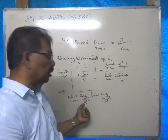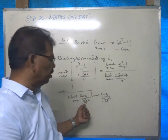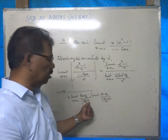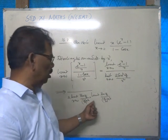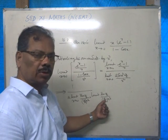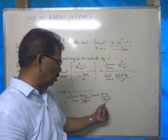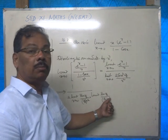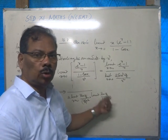Instead of x in the denominator, we have written x by 2. To compensate for this, we have multiplied by 2. Here also, instead of x, we have written x by 2, and to compensate, we have again multiplied by 2.